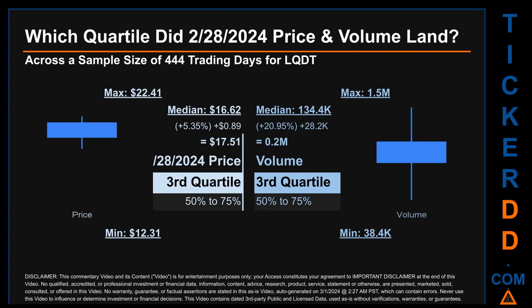Hello, my name is Maria. Which quartile did February 28, 2024 price and volume land in across a sample size of 444 trading days? The maximum end-of-day price for LQDT was $22.41 while the minimum was $12.31. Within that range, February 28, 2024's price of $17.51 landed within the third quartile — the 50 to 75 percent range of all sampled end-of-day prices. The day's volume also landed within the third quartile, that is the 50 to 75 percent range, with a max daily volume of 1.5 million and a minimum of 38.4 thousand. Quartiles tell us about the spread of a data set by breaking it into quarters, just like the median breaks the set in half.